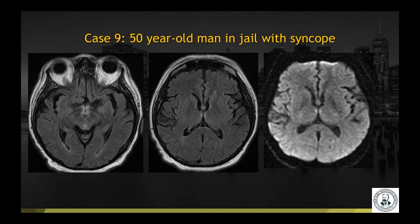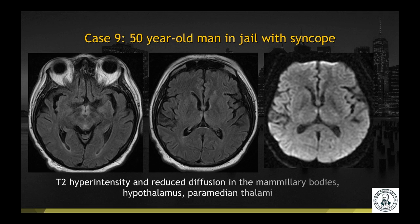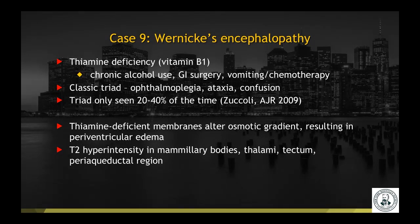Case number nine is a 50-year-old man in jail with syncope. T2 FLAIR and diffusion-weighted imaging demonstrate T2 hyperintensity and reduced diffusion in the mammillary bodies, hypothalamus, and paramedian thalami. This was a case of Wernicke's encephalopathy, typically caused by thiamine deficiency in the setting of chronic alcohol use, bowel surgery, vomiting, and chemotherapy. There is a classic clinical triad of ophthalmoplegia, ataxia, and confusion, although this triad is only seen in 20–40% of cases. It is believed that thiamine-deficient membranes have an altered osmotic gradient, resulting in periventricular edema in this typical distribution.